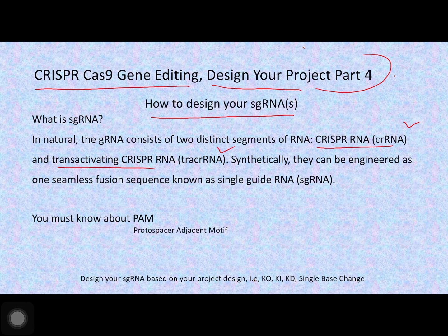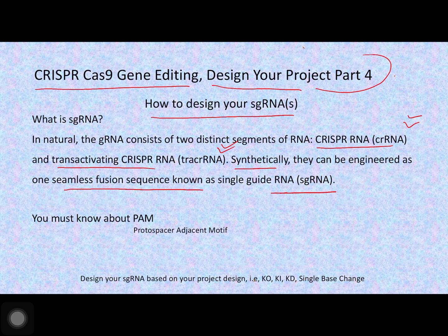The other is trans-activating CRISPR RNA. When the CRISPR-Cas9 system is repurposed for targeted gene editing in eukaryotes and even in other prokaryotes, these two RNAs — CRISPR RNA and trans-activating CRISPR RNA — are synthetically fused together and formed into a single form. That is called single guide RNA.